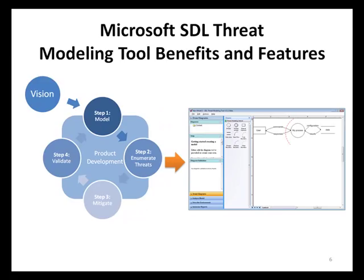The first benefit of the Microsoft SDL Threat Modeling Tool is process automation. The tool automates many aspects of the Microsoft SDL Threat Modeling process. Through automation, application teams can better ensure that they are following the process correctly and yielding the greatest results for their threat modeling efforts. Also, with automation, larger and more complicated application designs can be threat modeled with greater ease and efficiency than would be possible using a manual approach.